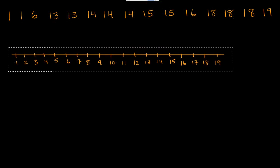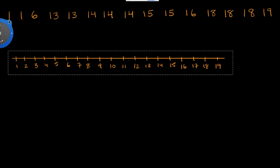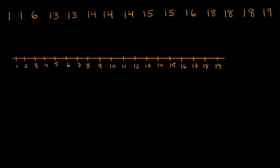On a number line, I have all the numbers from one to 19. We have two ones — one and two. We have one six, so let's put that six there. We have two 13s, so we go up here: one 13 and two 13s.